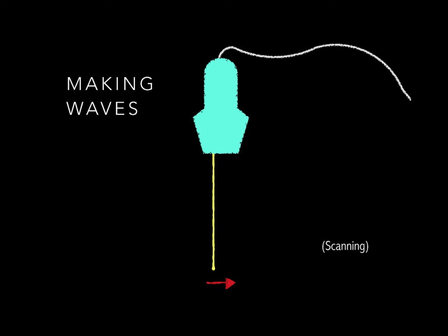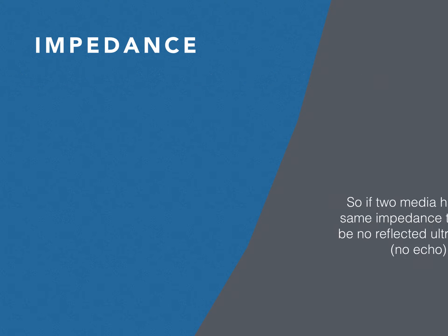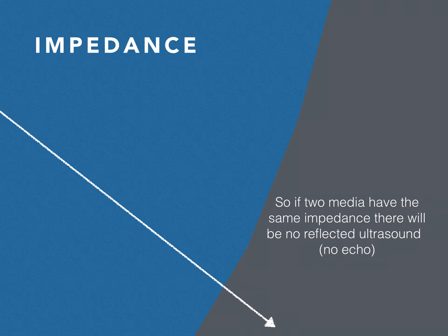Ultrasound machines work by building up a picture scan line by scan line. That makes one frame, and they repeat this many times per second to create a moving image. For each scan line, the machine waits to listen for echoes returning. Whether the sound waves are reflected back or passed straight through a tissue interface is determined by the difference in acoustic impedance. So if two media have the same impedance, there will be no reflected ultrasound at that interface — that is, no echo.